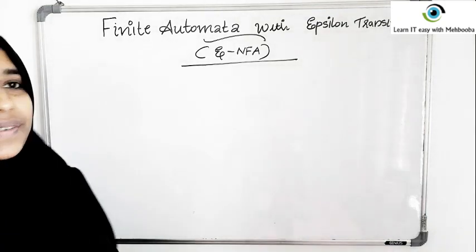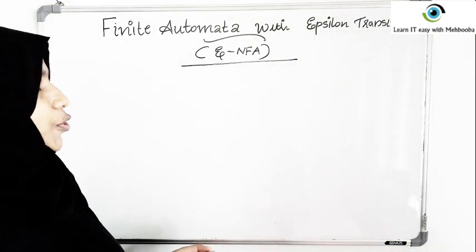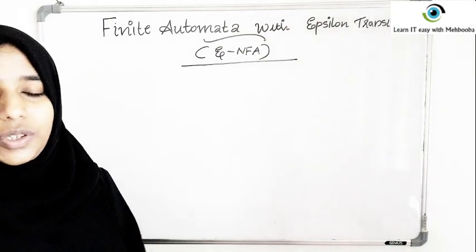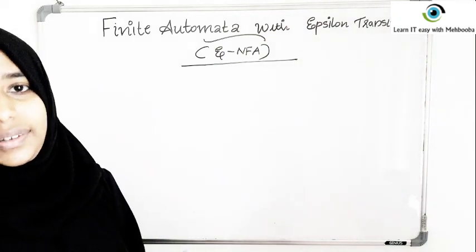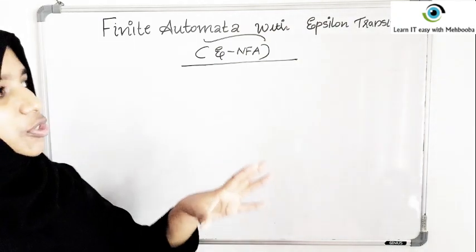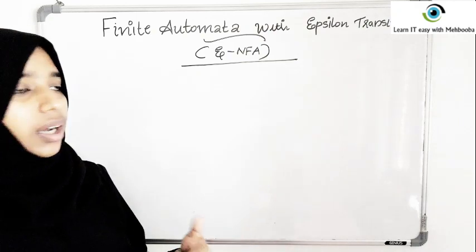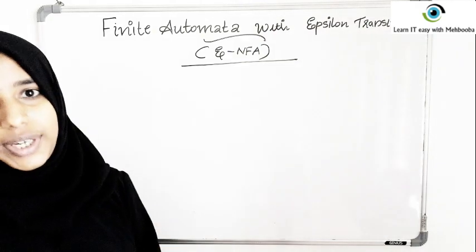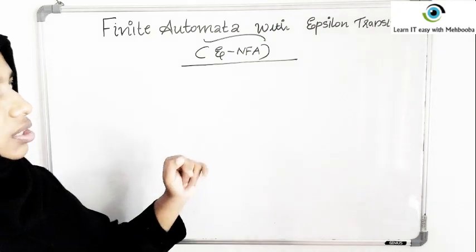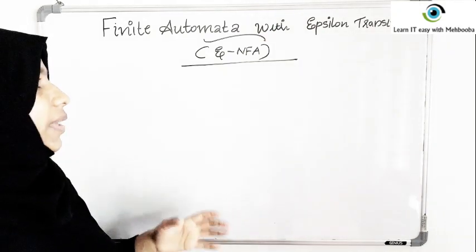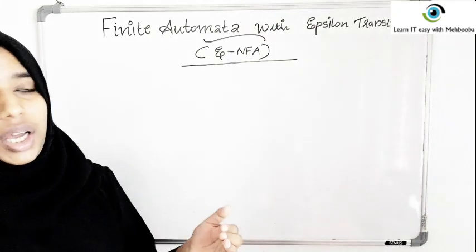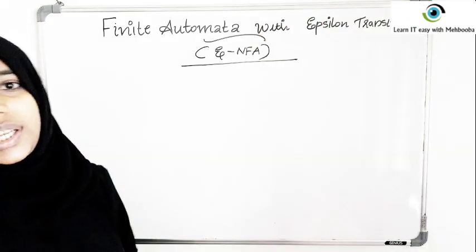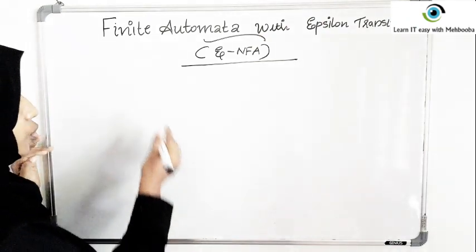In this video we will see finite automata with epsilon transitions. Epsilon is nothing but an empty string, so an epsilon transition means even without any input, you can move from one state to another state. This is not possible in case of DFA, but it is possible with an NFA, and that kind of NFA is known as an epsilon NFA.